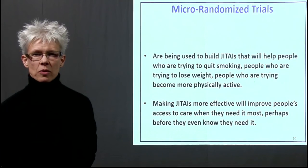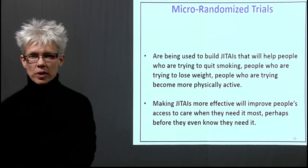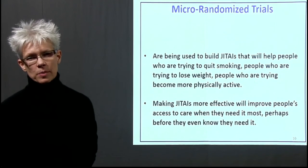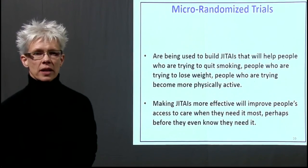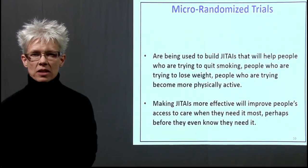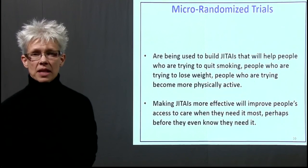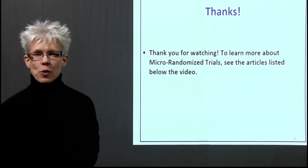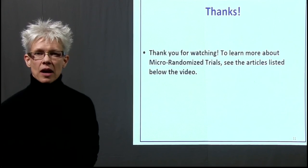Micro-randomized trials are being used to build just-in-time adaptive interventions that help people trying to quit smoking, people trying to stay in recovery after substance use, people trying to lose weight, and people trying to eat more healthily. If we can make just-in-time adaptive interventions more effective, this will improve people's access to care — providing care when they need it most, wherever they need it most, and sometimes even before they themselves know they need it. Thanks for watching. This is the second video in a series of three, and you'll find references below the video.